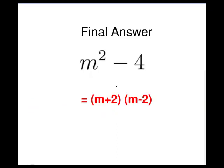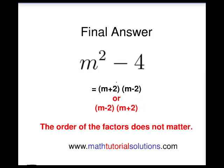For our final answer, m squared minus 4 equals m plus 2 times m minus 2, or m minus 2 times m plus 2. The order of the factors does not matter.